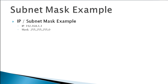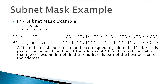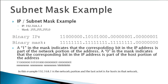When we look at that IP address and mask in binary, a binary one in the subnet mask means the corresponding bit in the IP address is part of the network portion. So all those ones across the first 24 bits tell the router the first 24 bits of the IP address identify the network. A zero in the mask means those corresponding bits identify the host. In this case, the first 24 bits identify the network and the last eight bits identify the host.